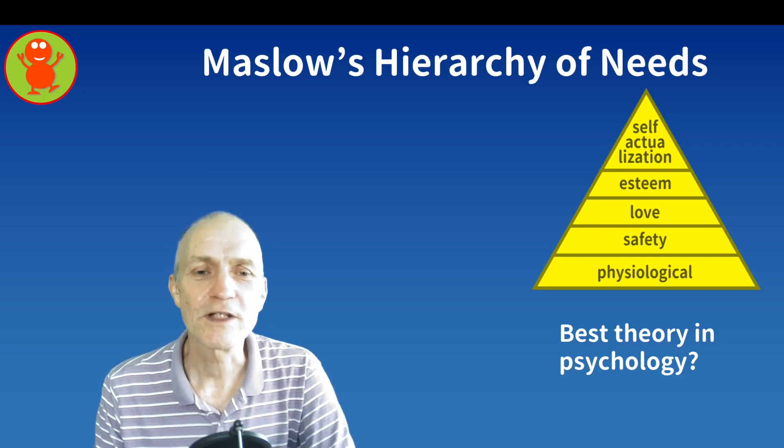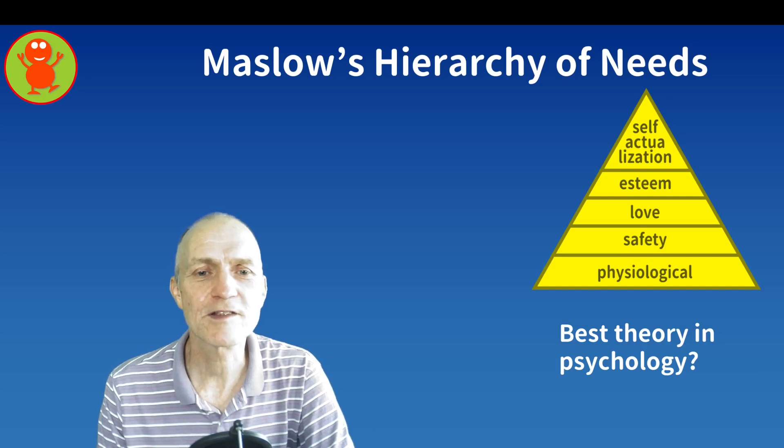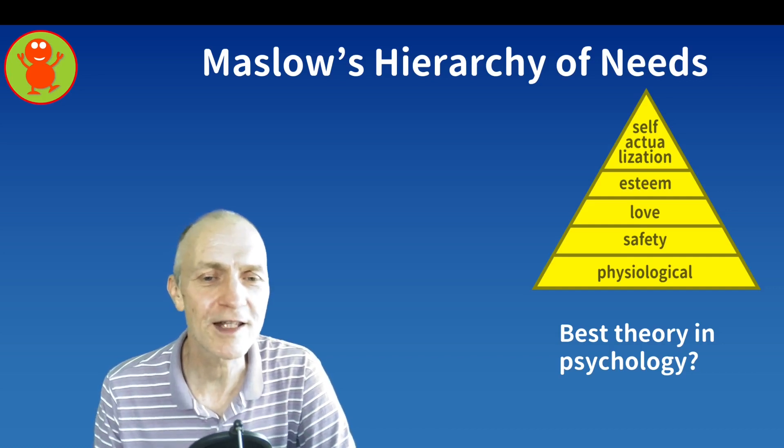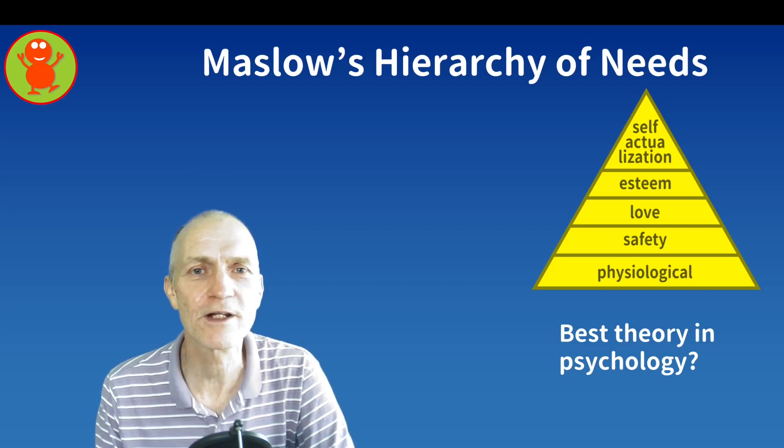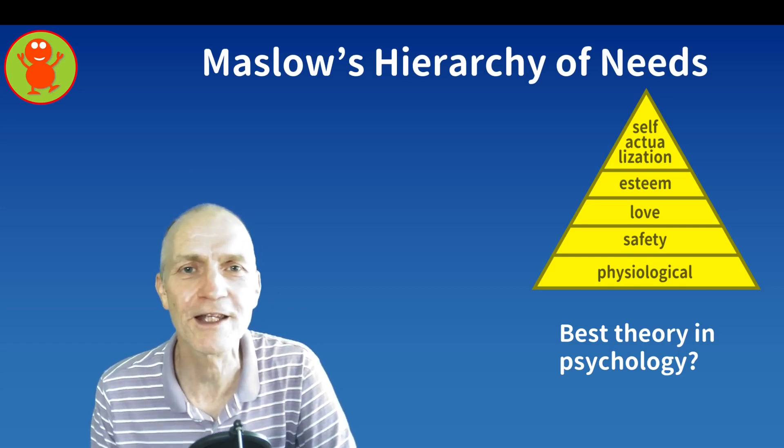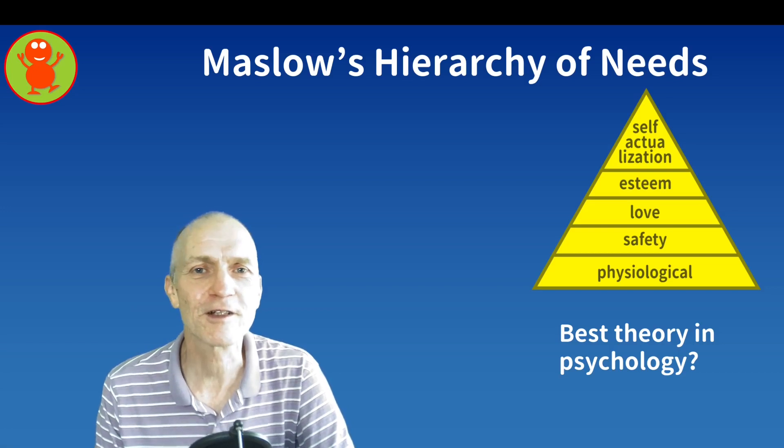Here of course you see the hierarchy of needs pyramid with physiological, safety, love, esteem, and self-actualization needs in it. I'm going to argue that it is the best theory and the most influential theory in the history of psychology.